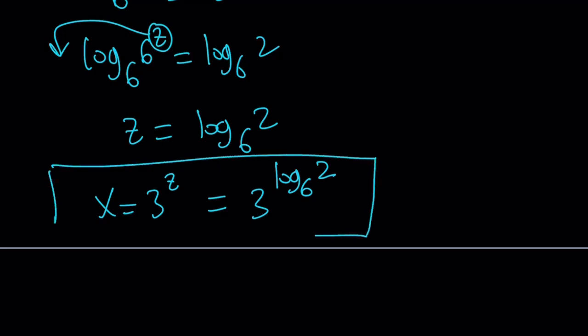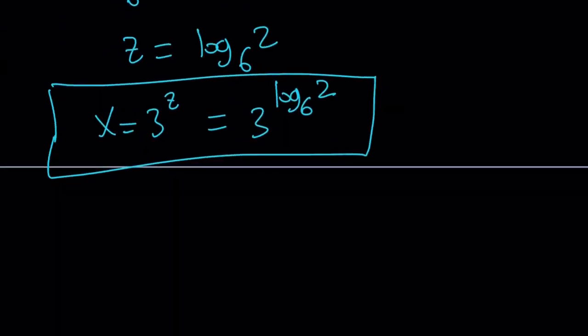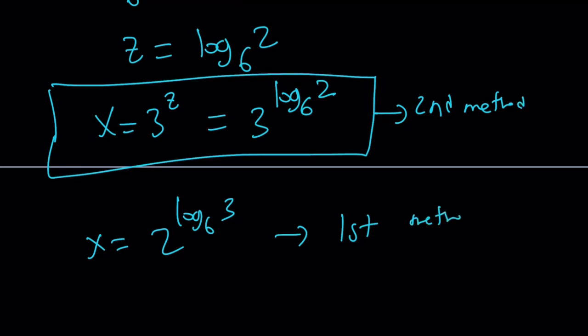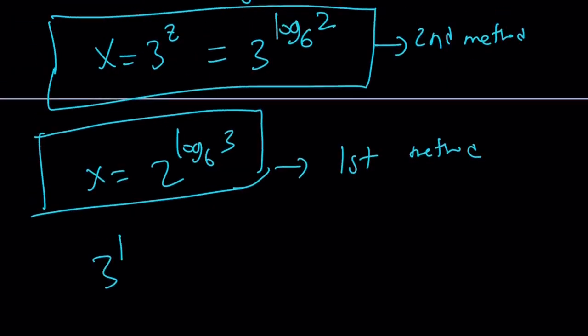And now let's compare our answer to the first method. The first method gave us 2 to the power log 3 base 6. And this is from the second method. Why are they different? And the answer is they're not. They look different, but they're not different. They are the same. Why? Because 3 to the power log 2 with base 6 is the same as 2 to the power log 3 with base 6.